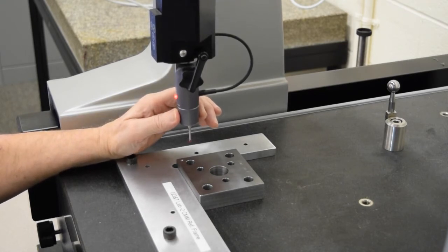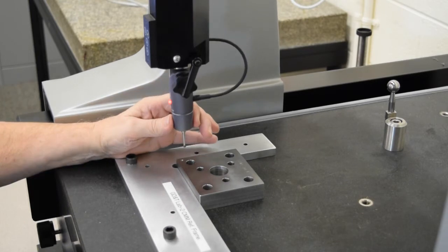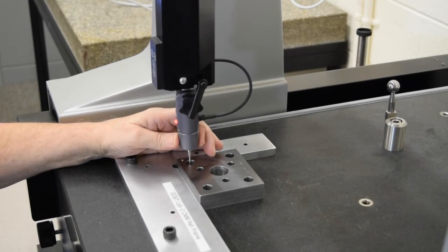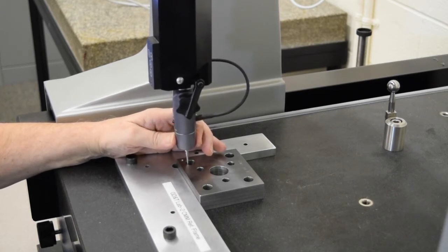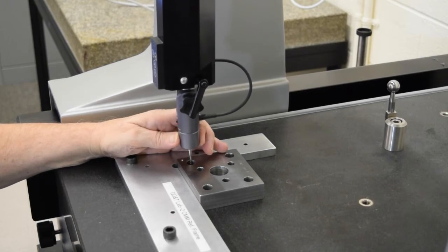Now we're going to start measuring the holes. And I like to sample the holes in the same order that they're numbered on the print. And as you're measuring the hole, try and go around the hole's circumference in order. Don't zigzag back and forth, or it can get a little confused about what it is it's measuring.